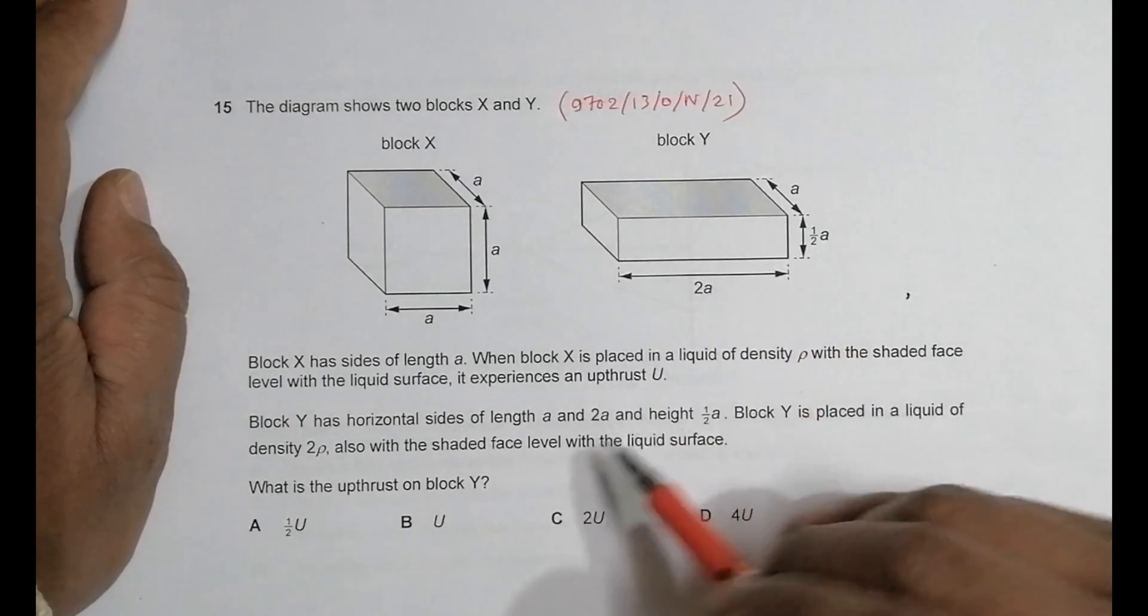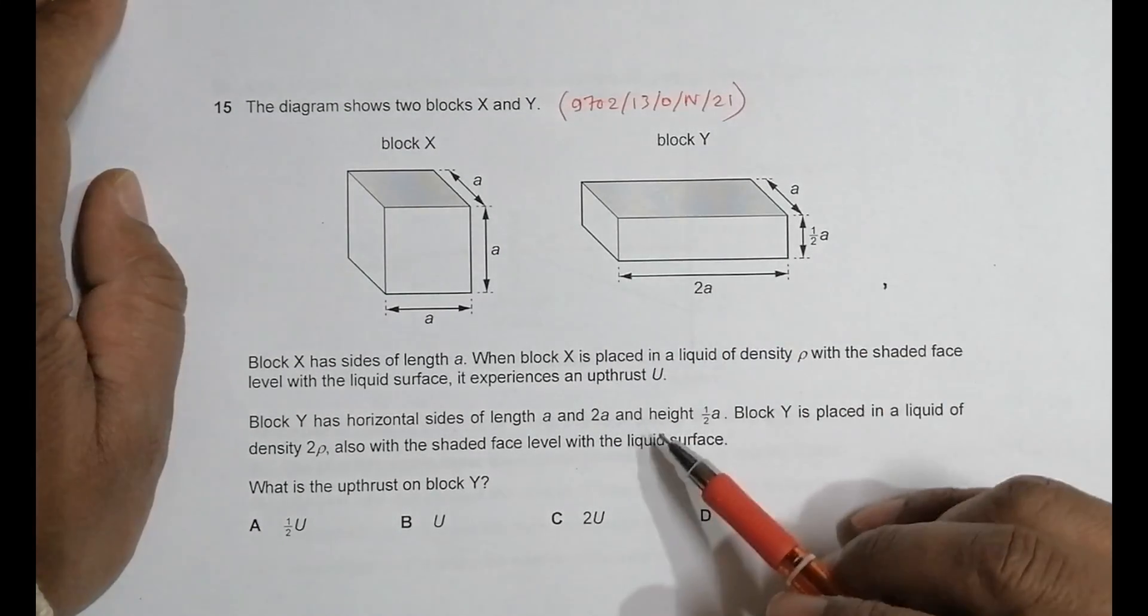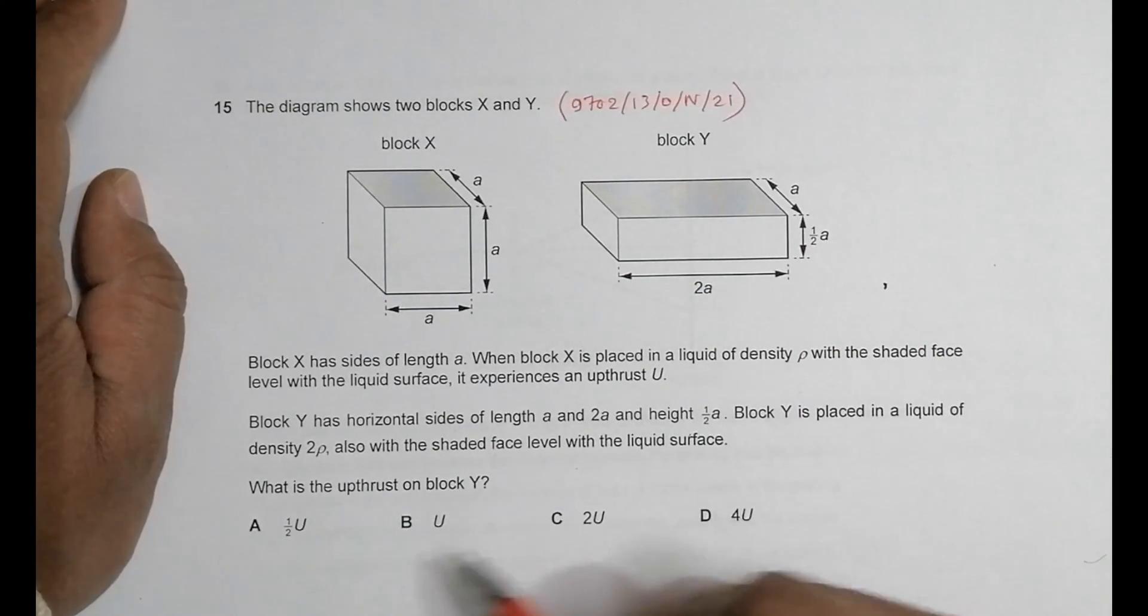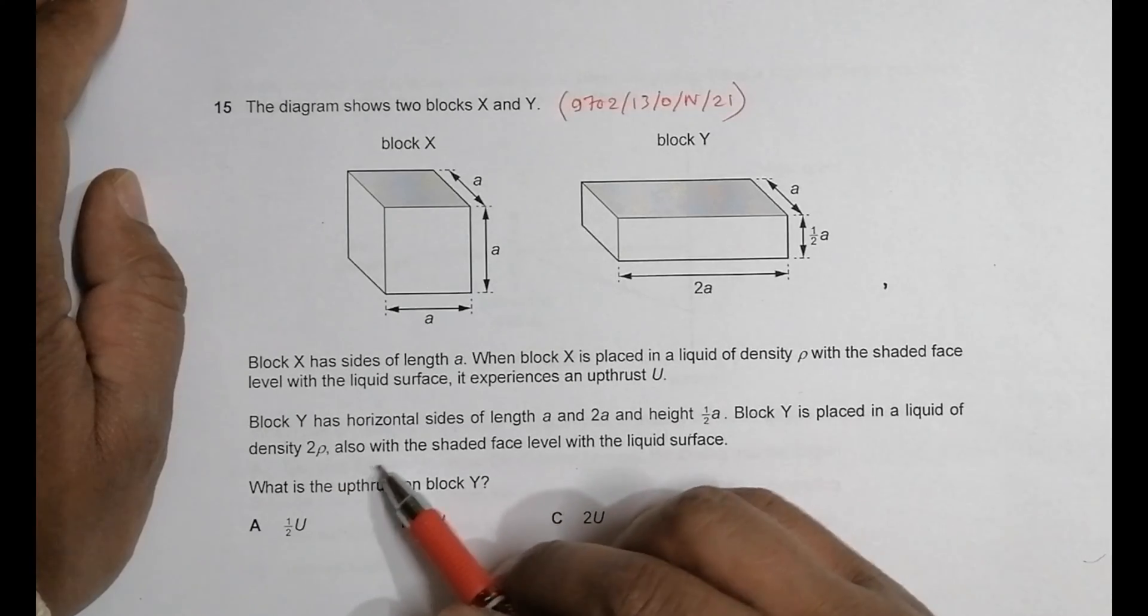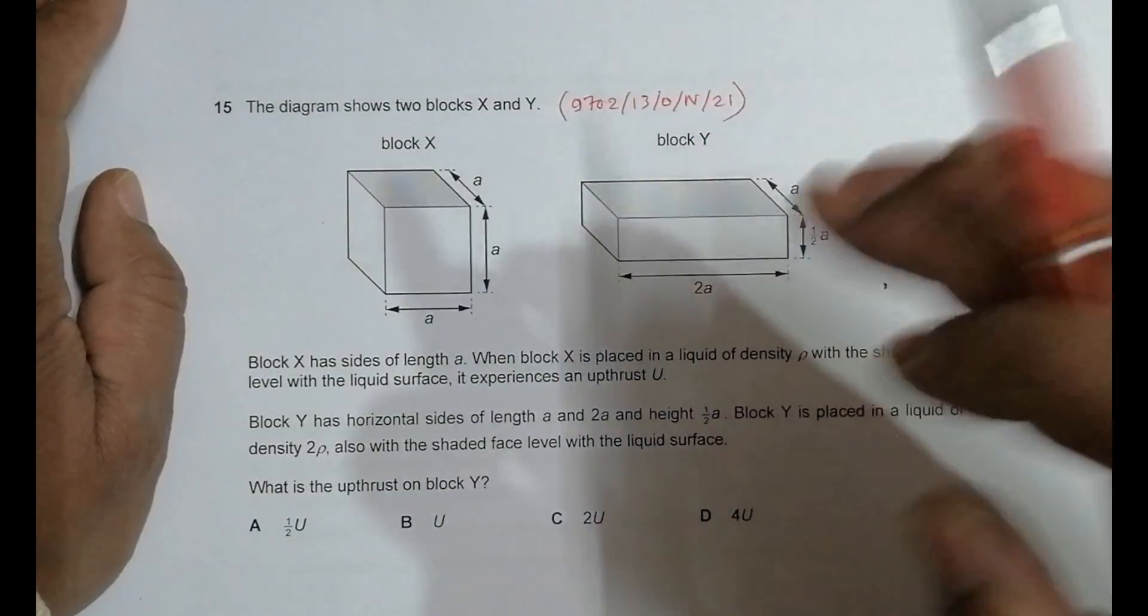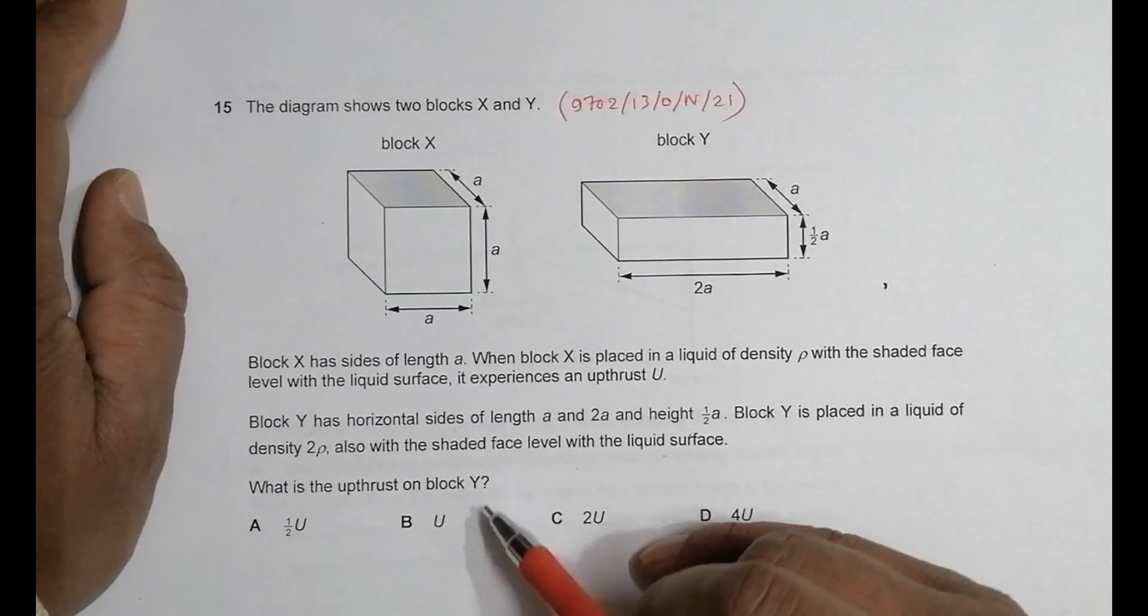horizontal sides of length a and 2a, and height a/2. Block Y is placed in a liquid of density 2ρ, also with the shaded face at the surface, which means it also just drowns. What is the upthrust on block Y?